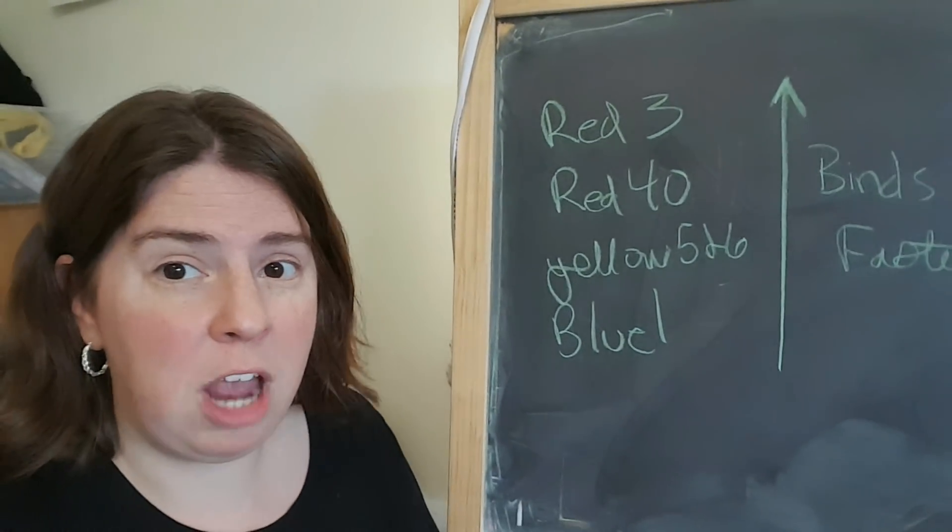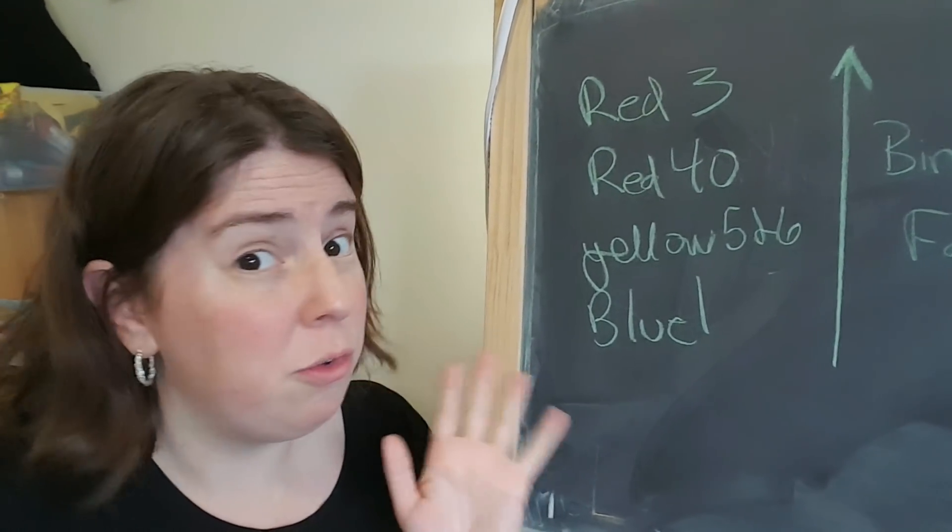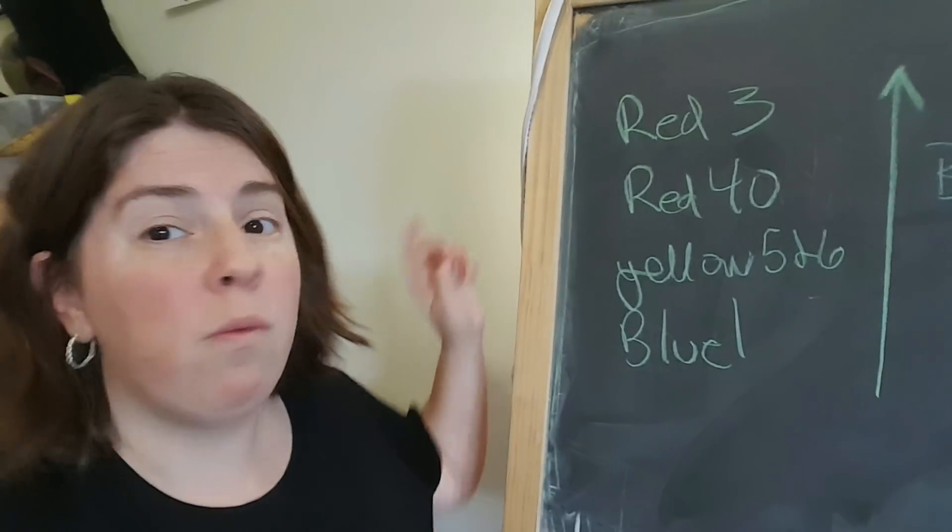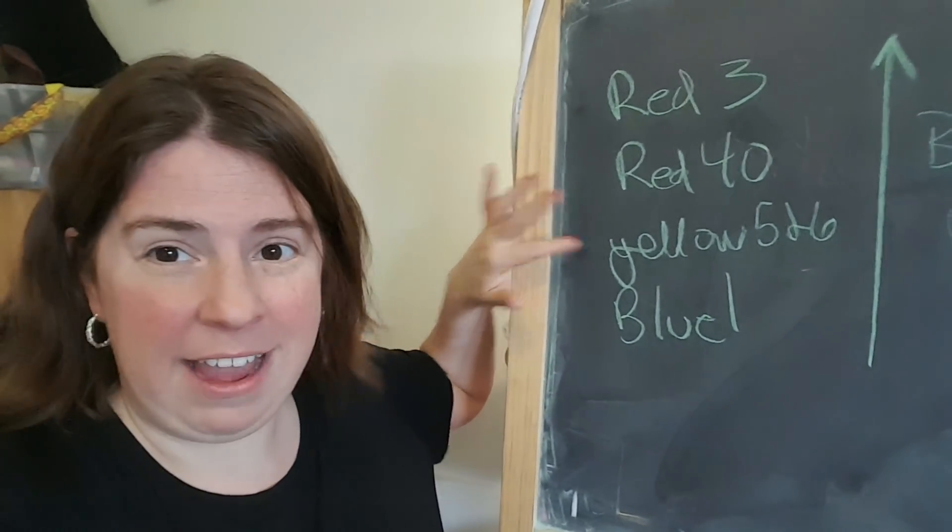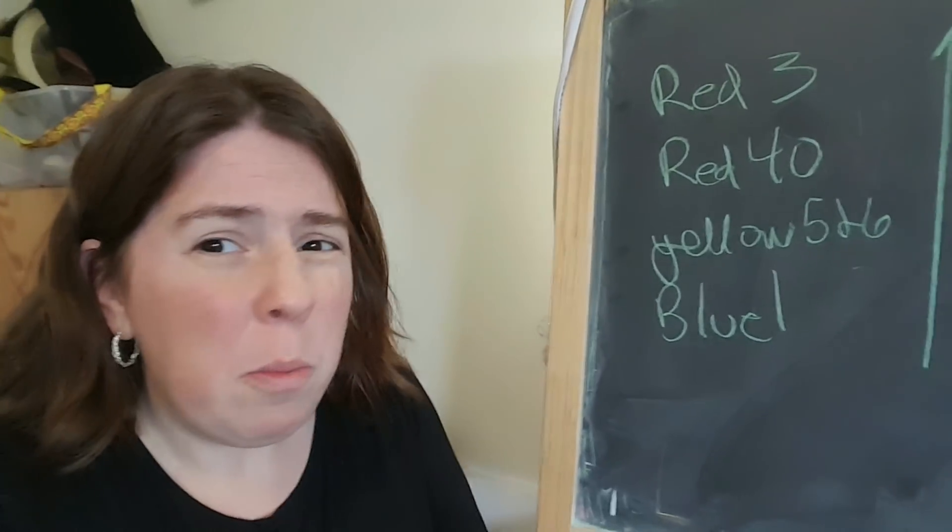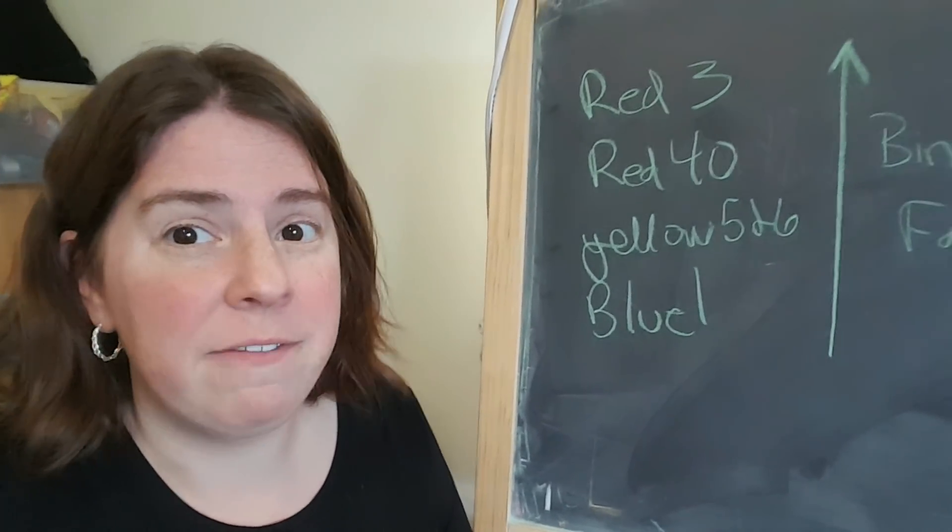Now in terms of food coloring, there are five food coloring molecules that are used really frequently in the US: Red number 3, Red 40, Yellows 5 and 6, and Blue number 1. Blue number 2 is used sometimes, but I don't find it as frequently in food coloring mixtures.